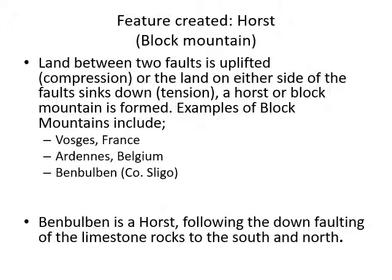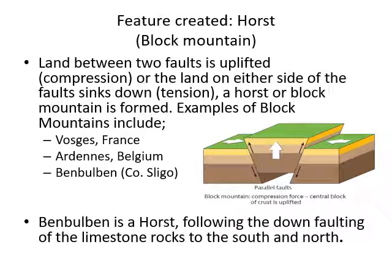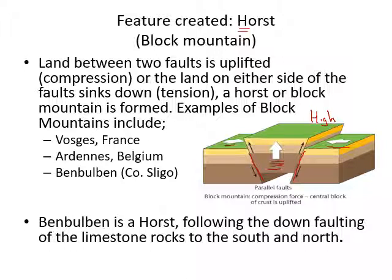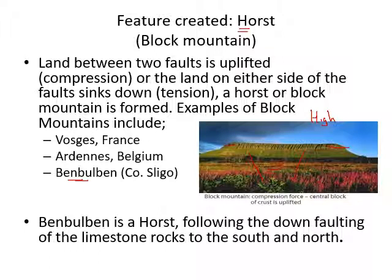The landscape feature created by this is a block mountain, also known as a horst. I remember it as H for height, H for horst - a mountain is high. Because of compression, two pieces of crust are forced together along parallel fault lines, and the block of land pops upwards relative to the land around it. One good example in Ireland is Ben Bulbin in County Sligo. Uluru or Ayers Rock in Australia is another good example. Ben Bulbin is a horst or block mountain.